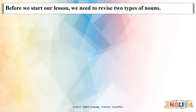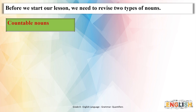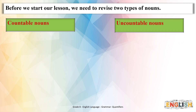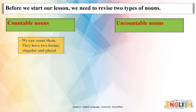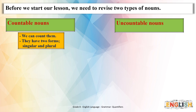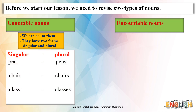Before we start our lesson, we need to revise two types of nouns: countable nouns and uncountable nouns. Countable nouns are nouns that we can count. They also have two forms, singular and plural. For example: pen (singular), pens (plural), chair, chairs, class, classes, and so on.